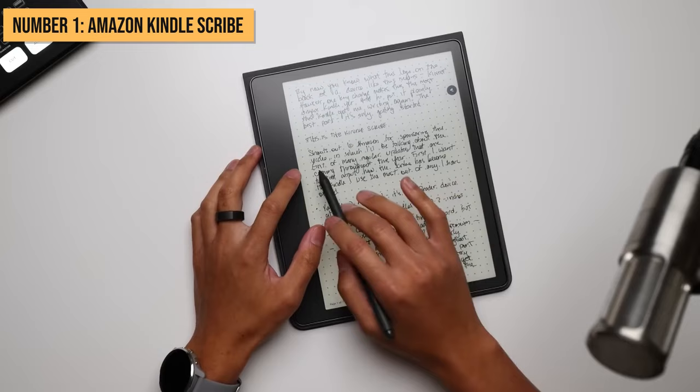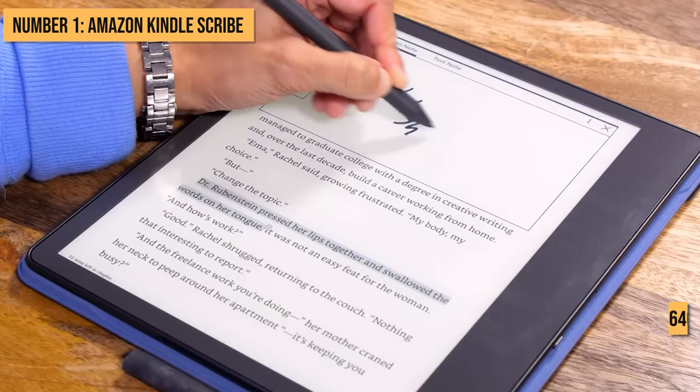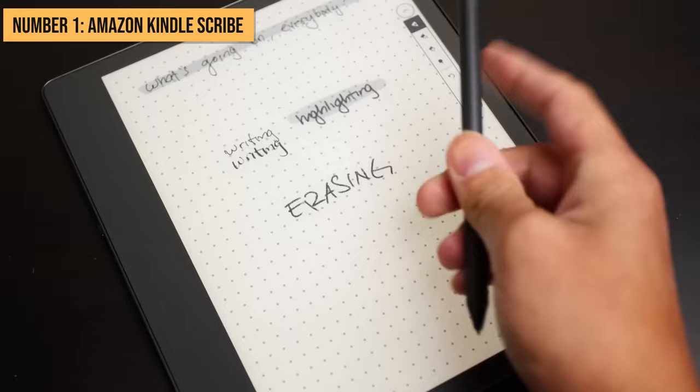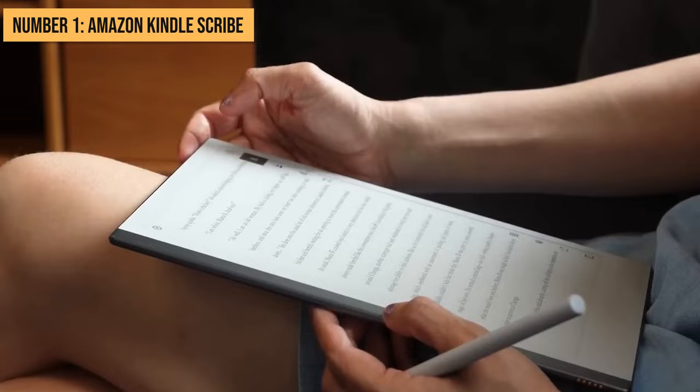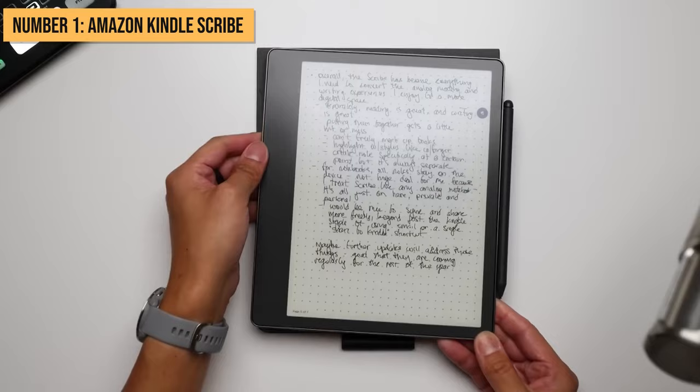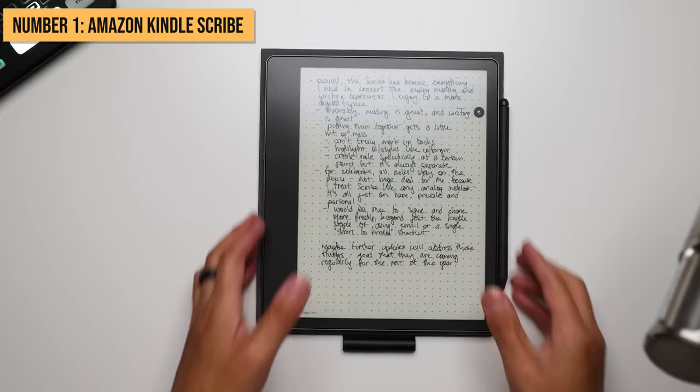Notes are backed up automatically to the cloud thanks to the integrated 16GB, 32GB, or 64GB storage options. Now, the Scribe builds on the Kindle ecosystem, letting you effortlessly alternate between writing notes or highlighting text in ebooks purchased from Amazon's vast Kindle store. Plus, you can import and annotate PDFs or Word documents via email or the companion mobile app.